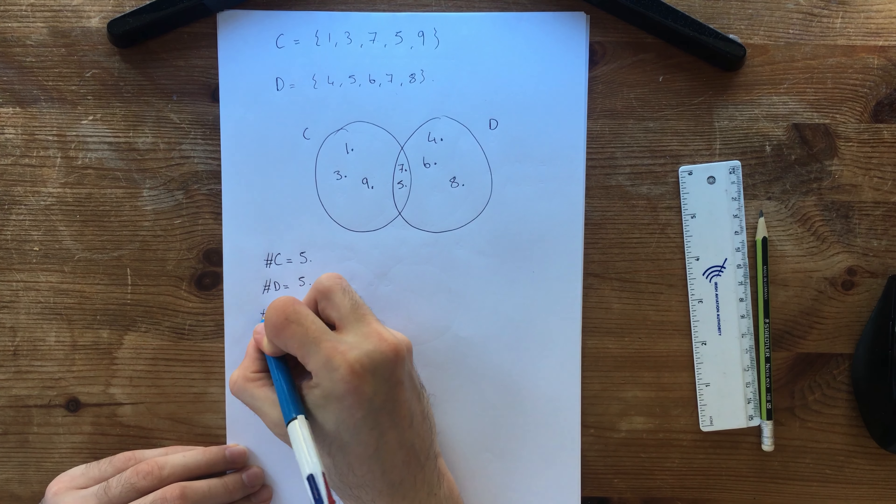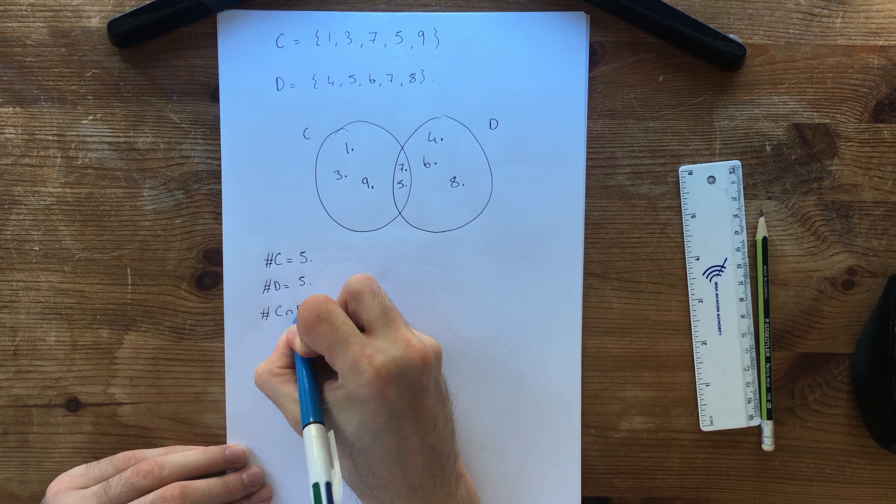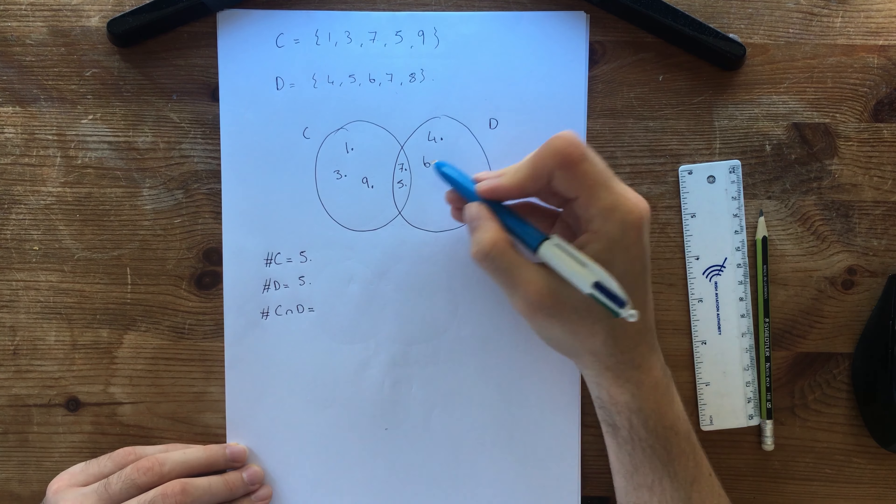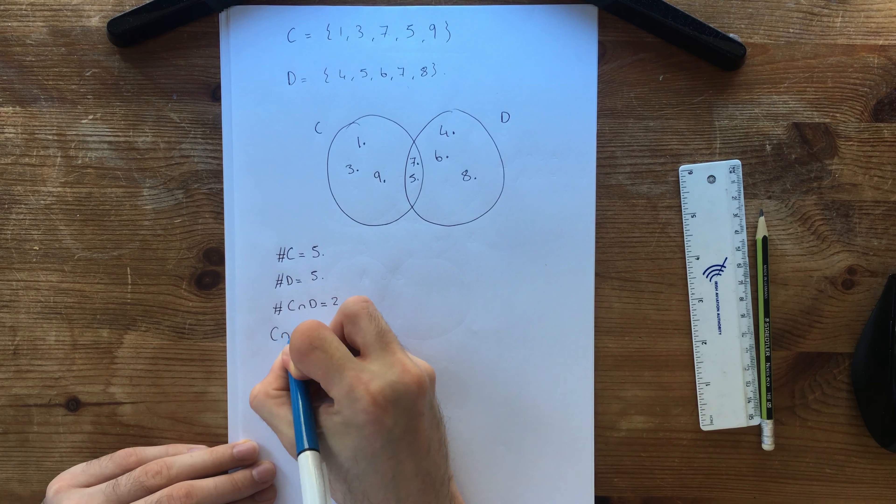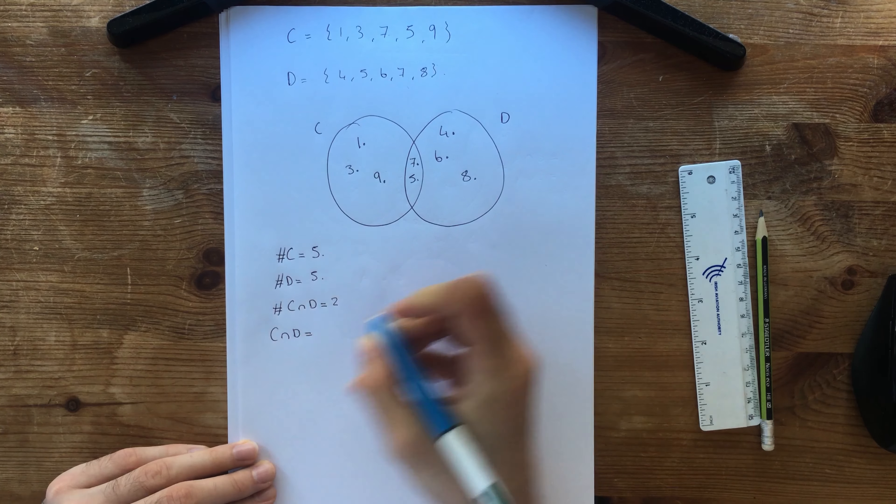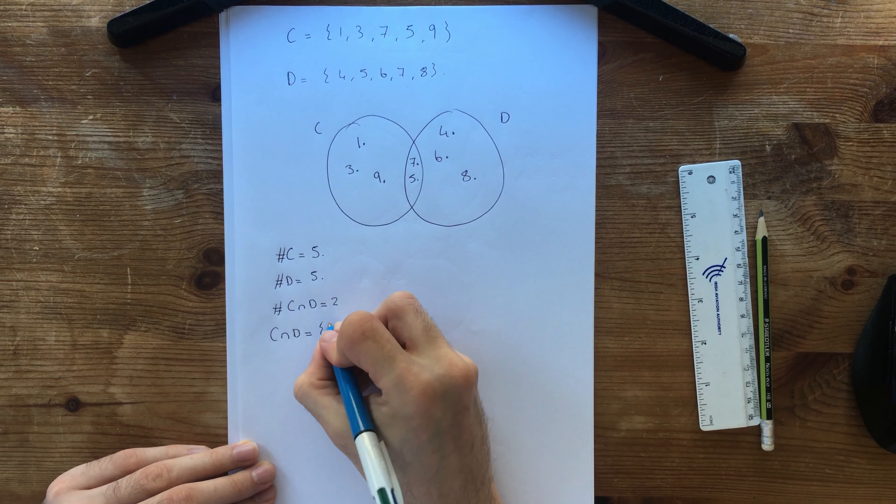How about the cardinal number of the intersection? So C intersection D is equal to 2. Okay, that's brilliant. How about what is C intersection D? So we're going to have what's in the middle. That's 7 and 5.